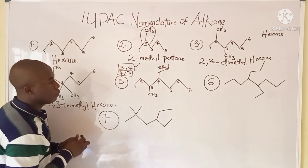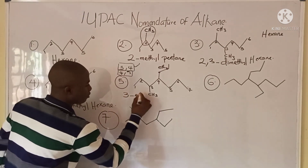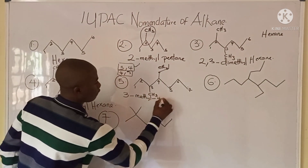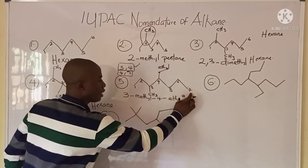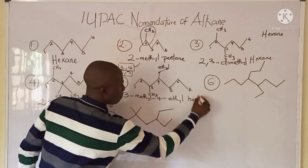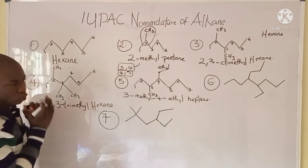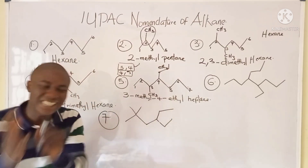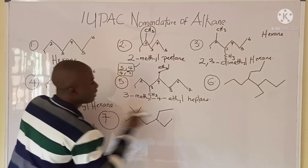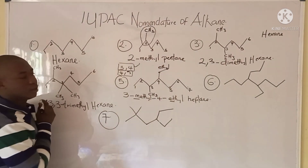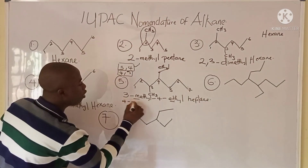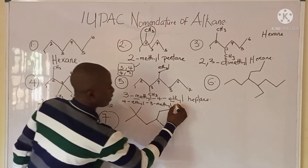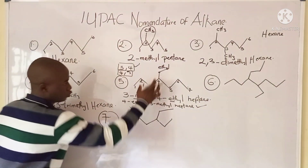The compound has a 3-methyl and 4-ethyl group, with seven carbons as the parent chain making it heptane. However, in organic chemistry substituents must be arranged in alphabetical order. 'E' comes before 'M,' so the correct name is 4-ethyl-3-methylheptane.